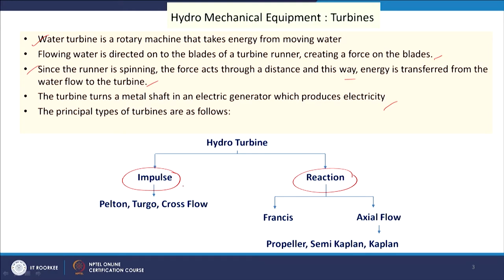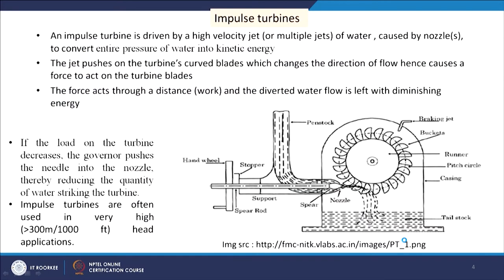Examples of impulse turbines are Pelton, Turgo, and cross-flow, whereas reaction turbines include Francis and Kaplan. Kaplan is basically an axial flow turbine — propeller, semi-Kaplan, and Kaplan are types within that category.